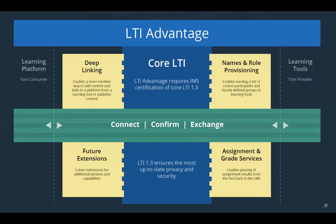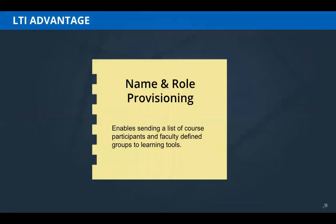Let's take a deeper look at the three extensions available now. The Names and Role Provisioning Service enables retrieving lists of course participants, groups, and roles in an easy and controlled way — the extension communicates defined groups to learning tools. This extension was previously called the membership service.